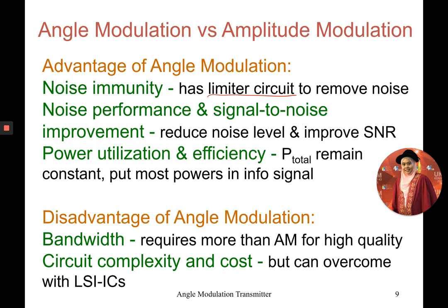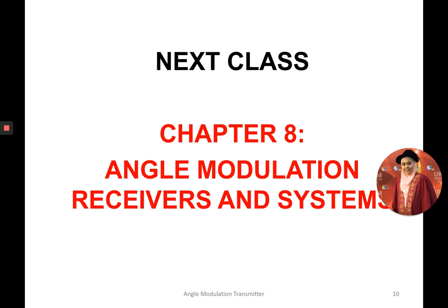The disadvantage is that when we calculate using the Bessel table and Carson's rule approximation, the bandwidth required is much larger than AM signals, because angle modulation is used for high-quality, higher-frequency transmission. This makes the circuit more complex and costly. However, this can now be addressed using large-scale integration ICs, which have become increasingly affordable over time. That concludes Chapter 7; the next video will cover Chapter 8 on angle modulation receivers and systems.